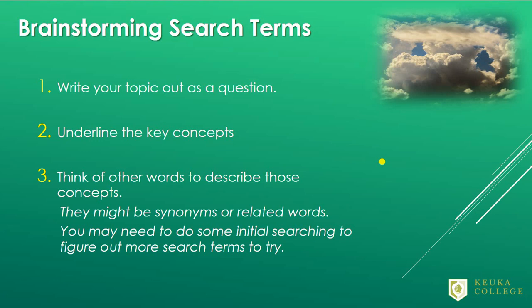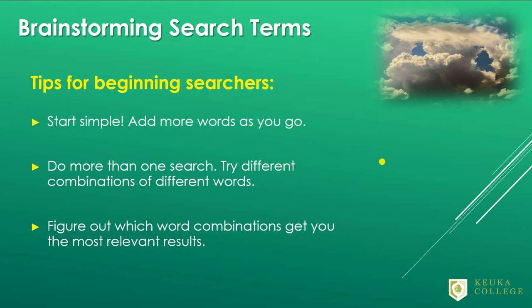For example, I might be looking for an article on cats, but miss one that used the word 'feline' instead. If you aren't too familiar with your topic, it might be hard to think of other words, and that's okay. Start doing some searches with the words you do know, and you'll see words in your results that will give you ideas for other terms to try. If you're new to this, start simple — use two or three words at the most, and then evaluate how relevant your results were. You can always add more words and see how your results changed. Do more than one search, and you'll start to notice that certain combinations of words get you better results.